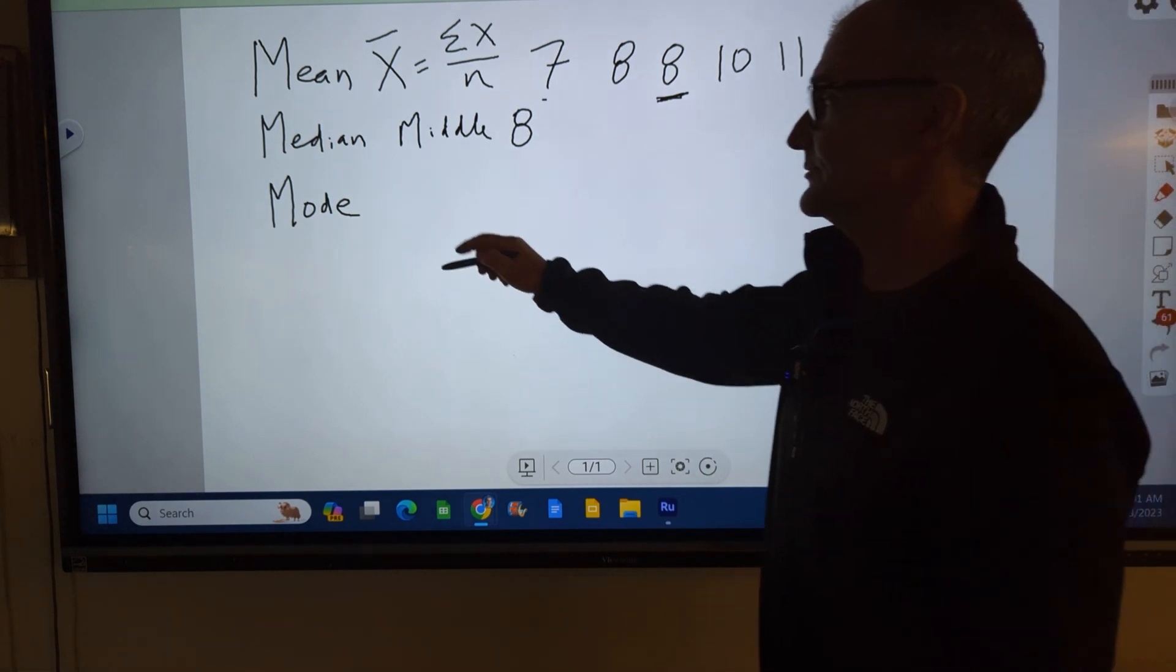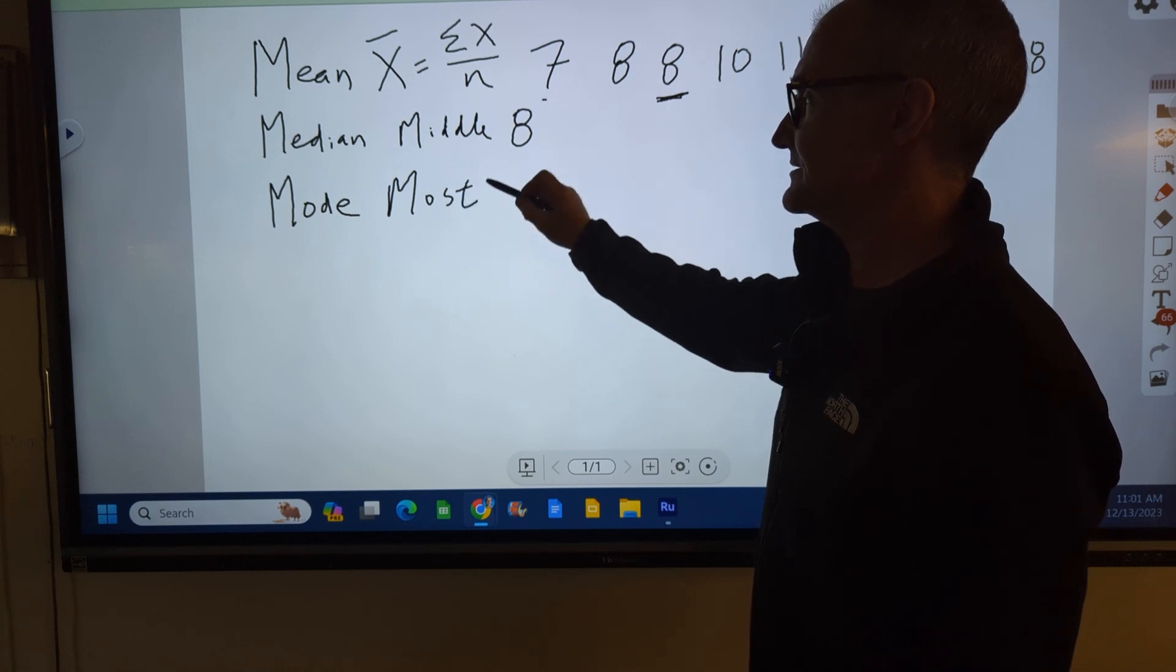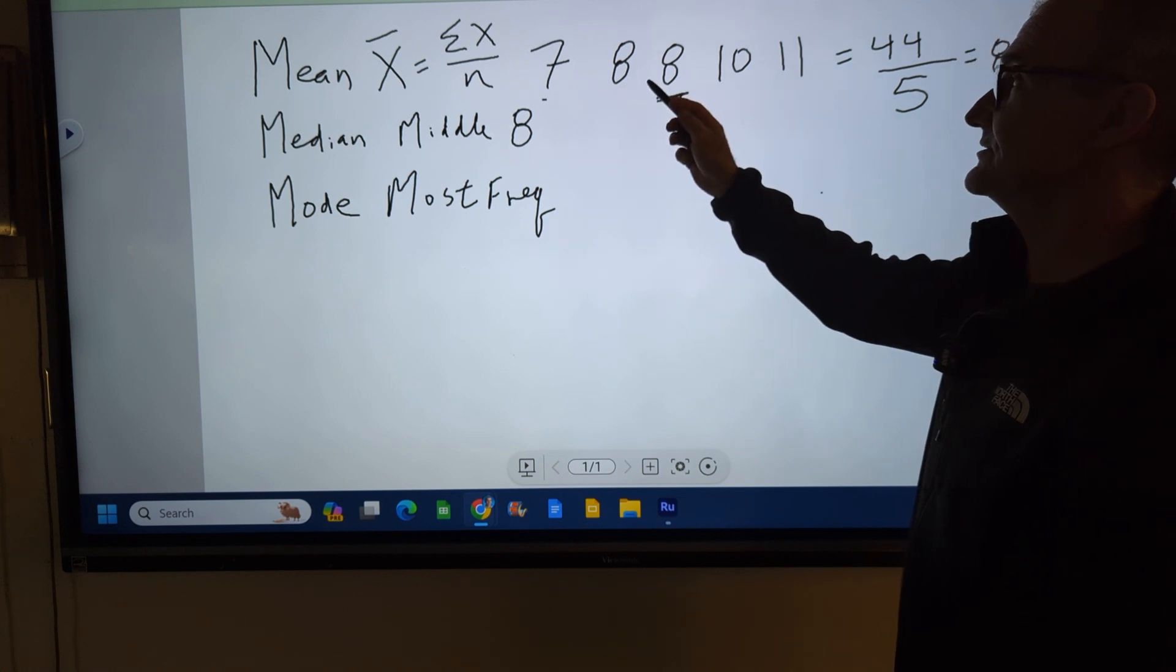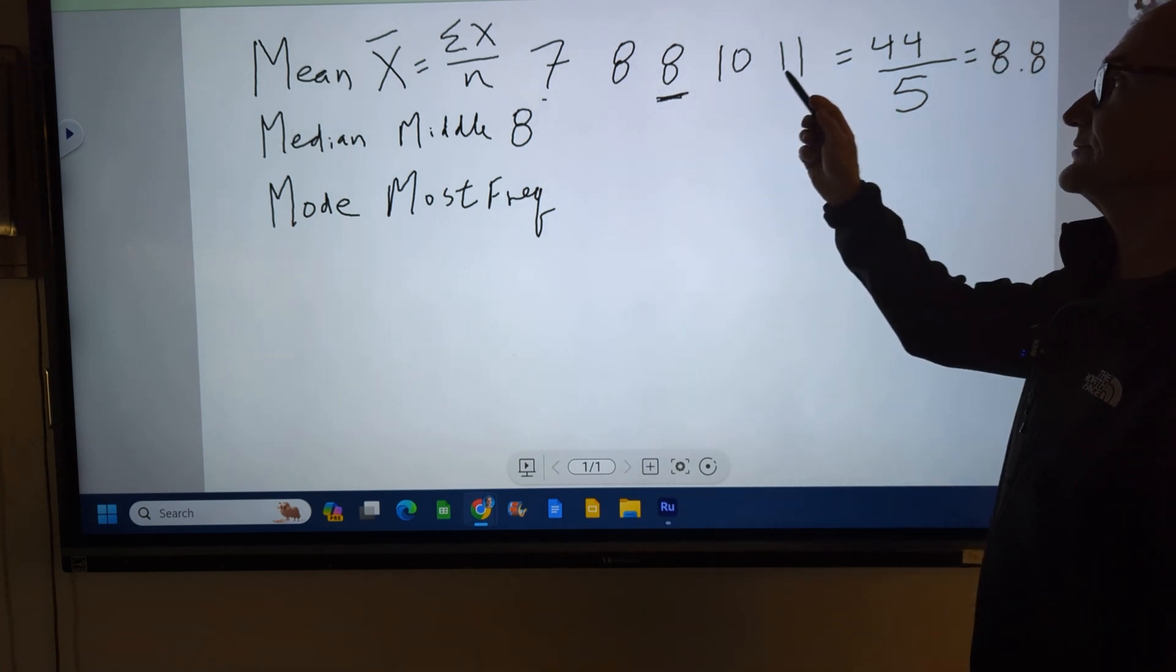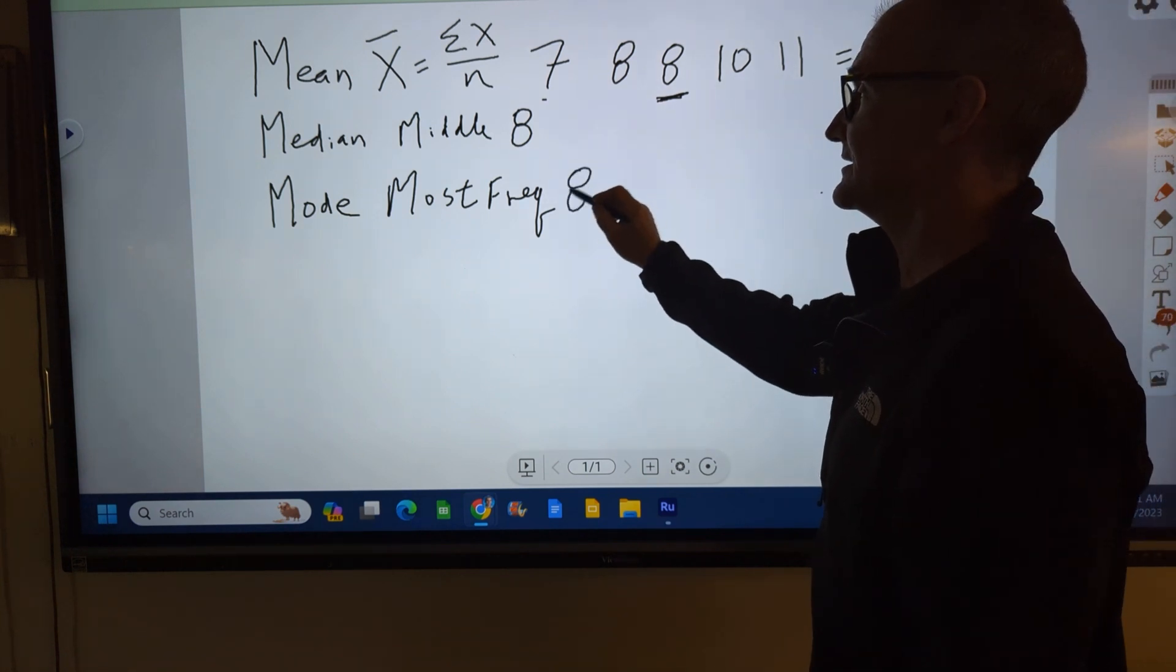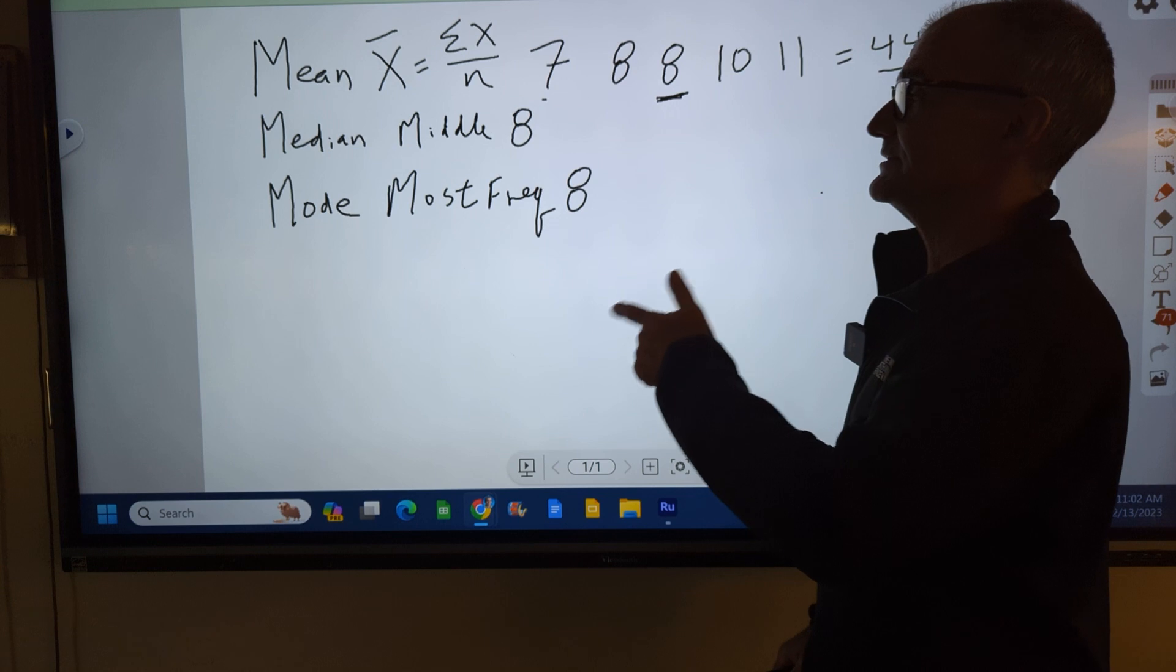The mode is the most frequent value, the one that shows itself most often. So I look up here, I have one value of 7, two values of 8, one value of 10, one value of 11. So the mode is also 8 because I have two values of that. So that's the mean, median, mode.